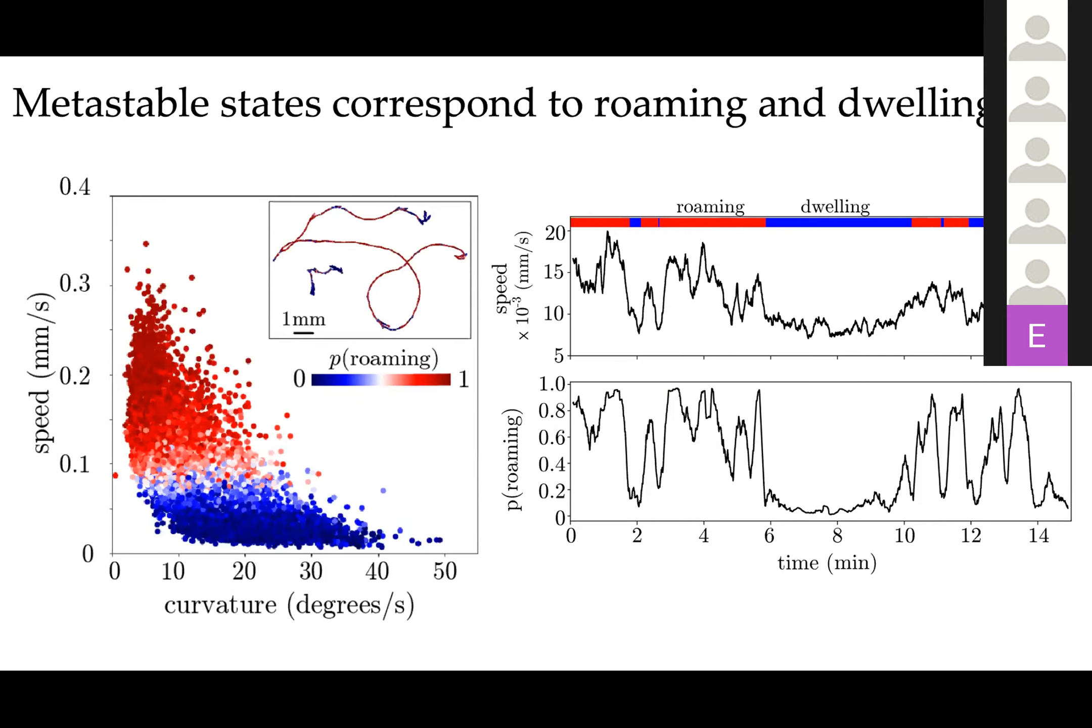You can clearly see that basically one of these clusters will correspond to high-speed, low-curvature states that have been previously described as the roaming states. The other state will have high curvatures and low speeds, which has been described previously as the dwelling states. You can also see here on the right-hand side that these states evolve over minute-long times, which is quite remarkable.